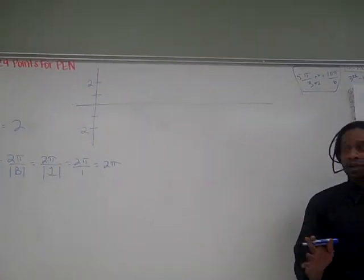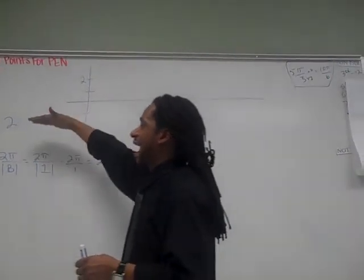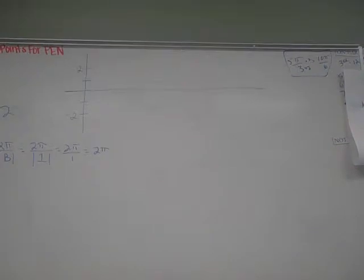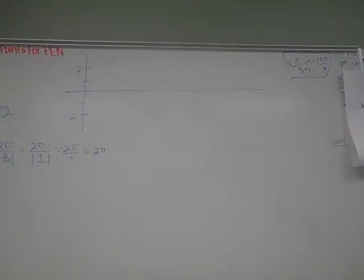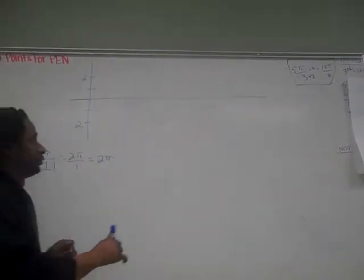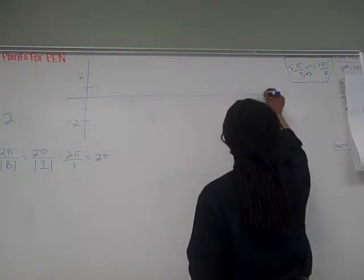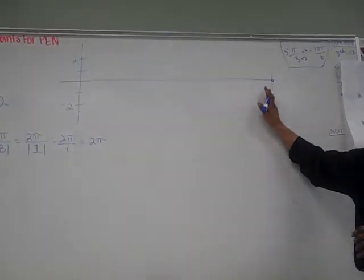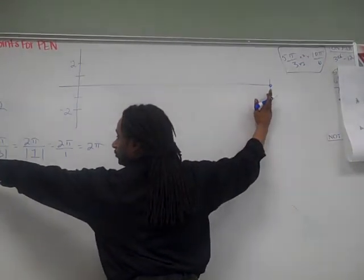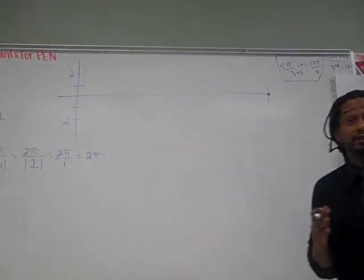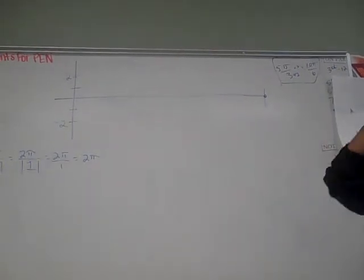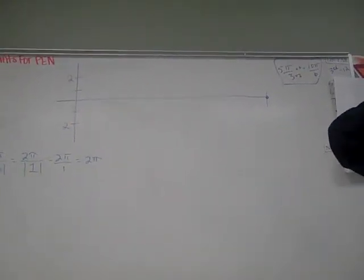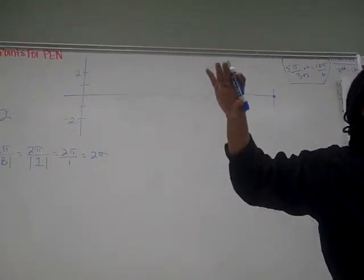If my amplitude deals with my y-axis, that means my period deals with the x-axis. What is my period? 2π. That means at 2π, what's going to happen with my graph? It's going to start repeating. Once you get that one period, all you got to do is repeat.